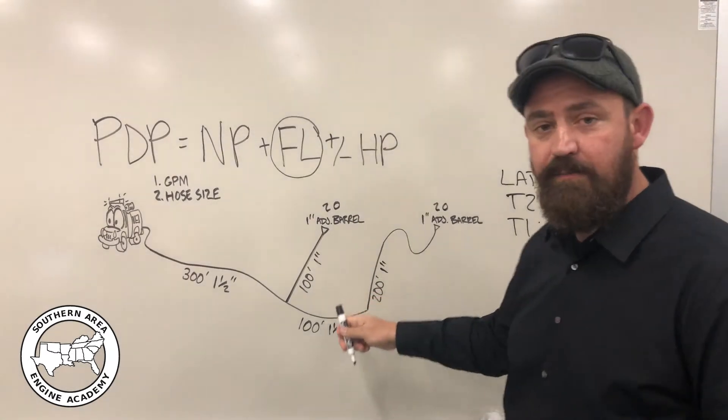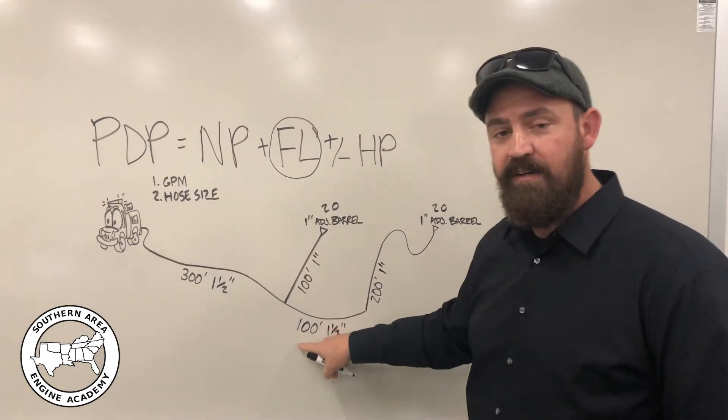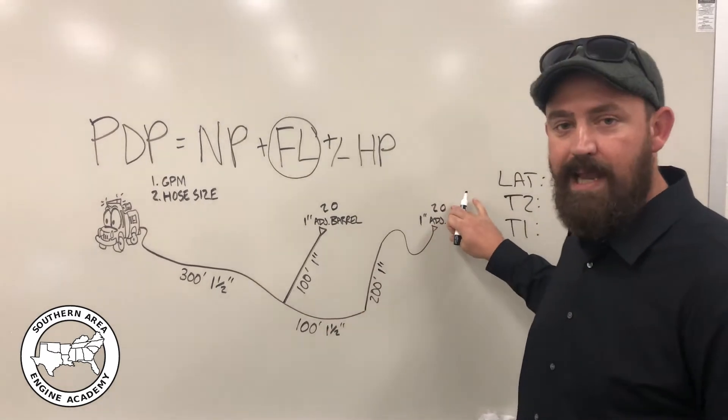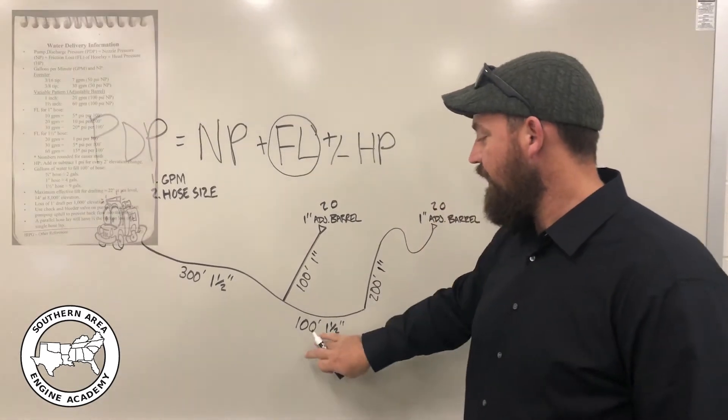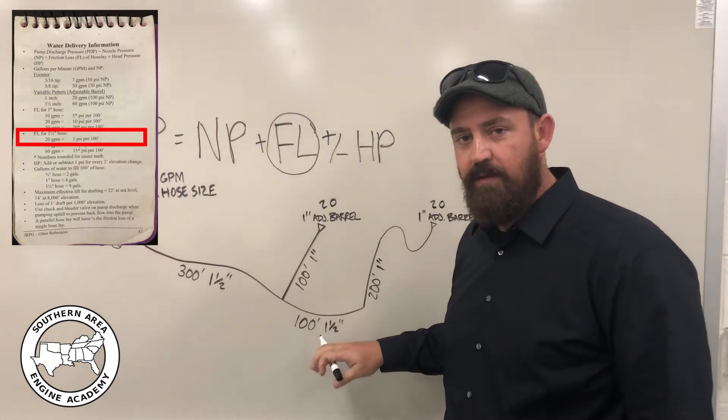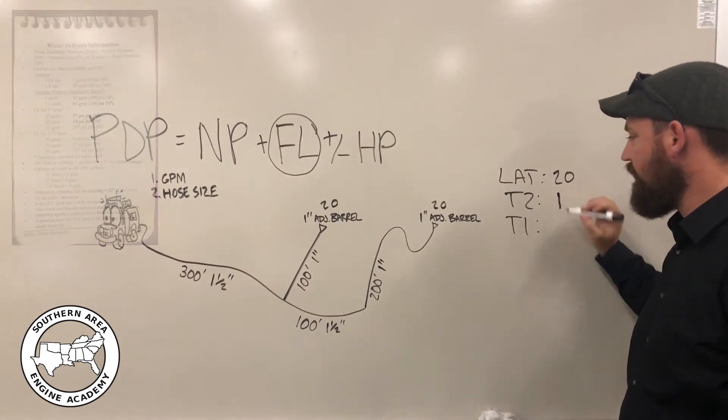Working our way backwards, we go to the second piece of trunk here. And so trunk two, we see we've got 100 feet of inch and a half hose that's supplying 20 gallons per minute. Looking in the IRPG, we see that 100 feet of inch and a half hose loses one PSI per section at 20 GPM.